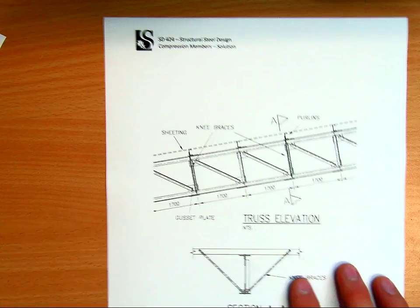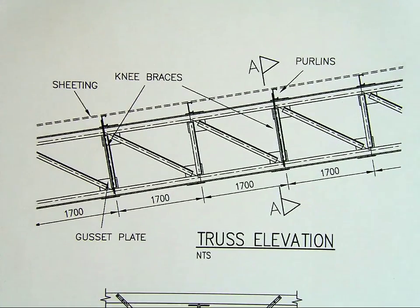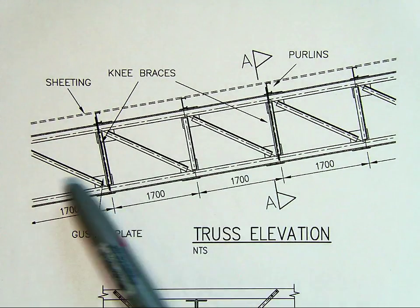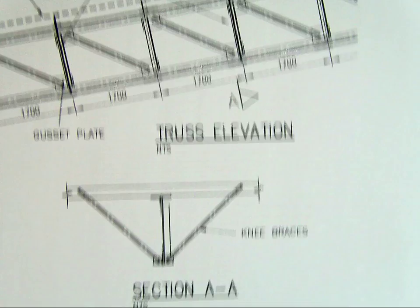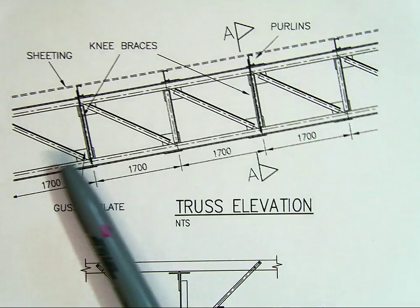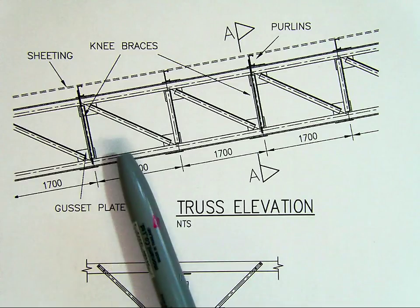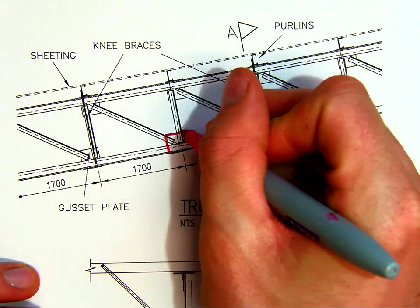Just a reminder, we have a truss that looks something like that. And we've got a back-to-back angle on the bottom. So here we have two angles forming the bottom chord. There are knee braces every second purlin, so we have this sort of brace supporting our section. And we have these gusset plates. These are about 1700 millimeters apart. But I've made the angles and sections not to scale, so they're actually larger than they should be, but just so you can clearly see them. We have these gusset plates at regular spacings.